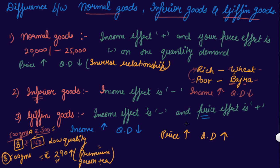So this is the difference between your normal goods, inferior goods, and Giffen goods.